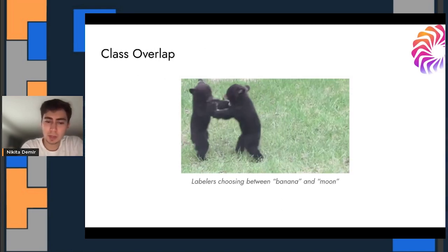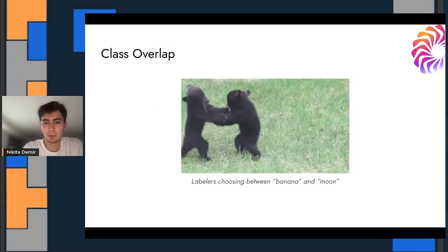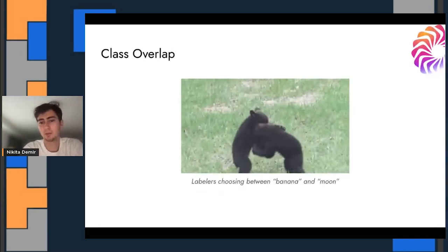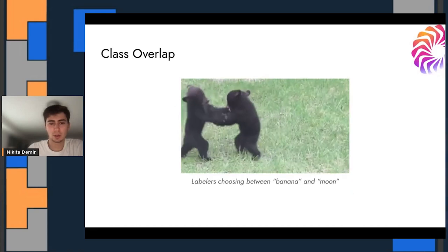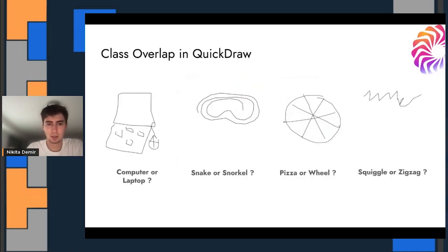So moving on to class overlap, like if you remember that example from the Quickdraw dataset where there was a banana or moon, sometimes things can just be difficult and labelers end up fighting over what the correct class is without any chance of success. For example, going back to Quickdraw, here are a bunch of examples. You might have differing opinions on what constitutes one class or the other, but it's pretty evident that no one's really set up for success in labeling these. Computer or laptop, well, those are kind of the same classes, but in Quickdraw, those are different. Snake or snorkel, in this case, this specific example could be confused between the two. Pizza or wheel, and squiggle or zigzag.